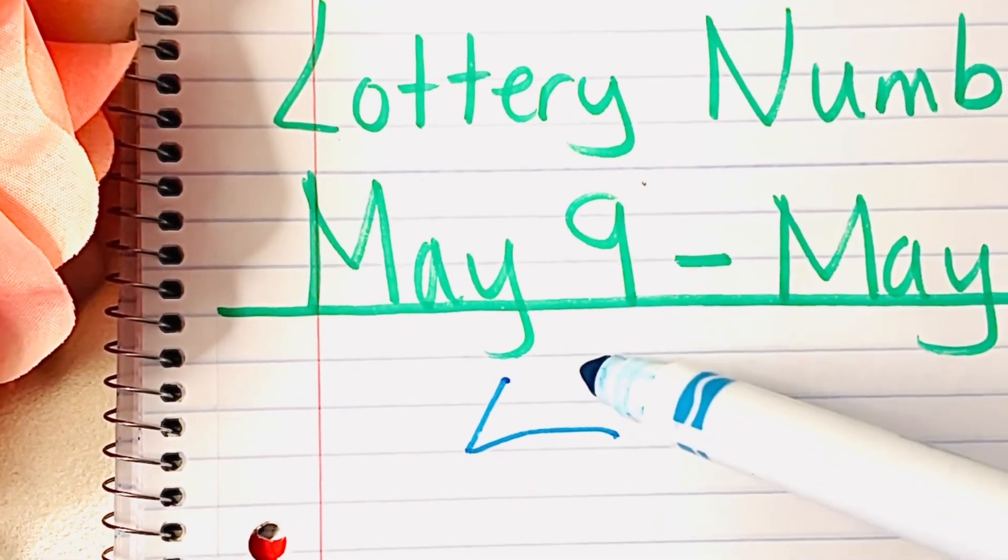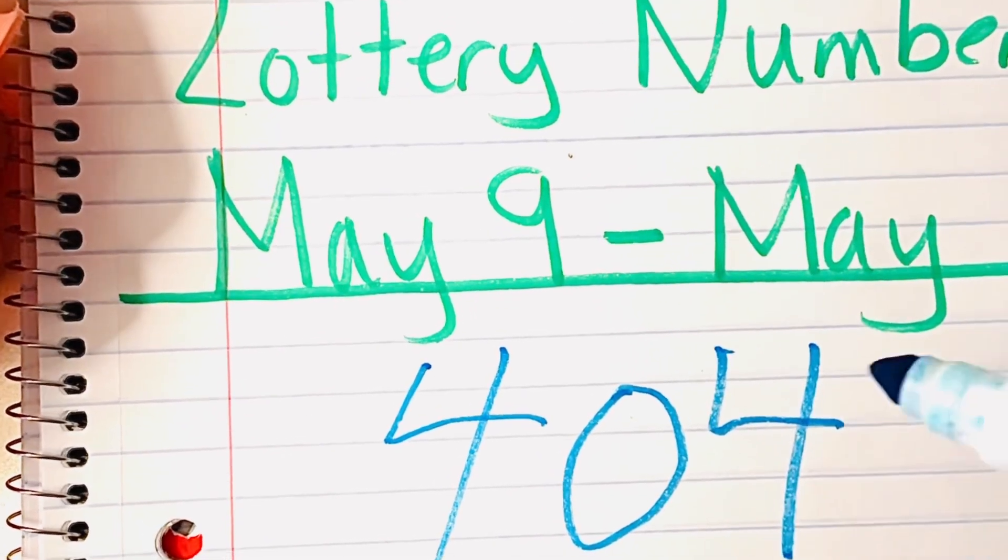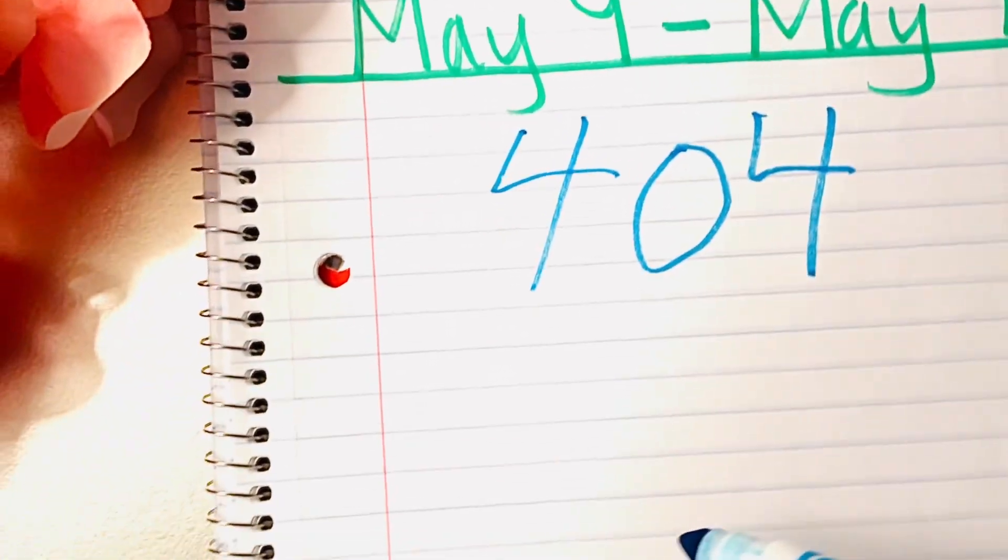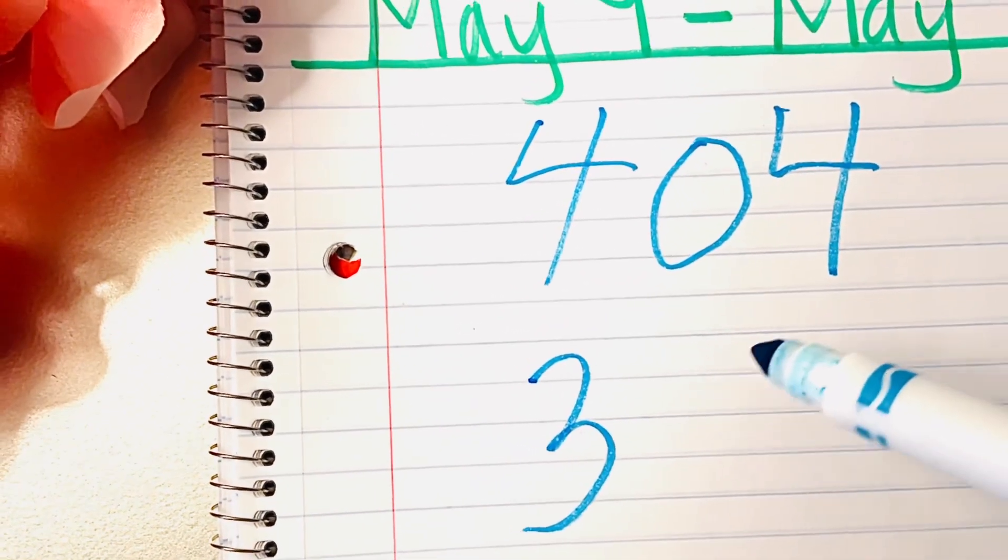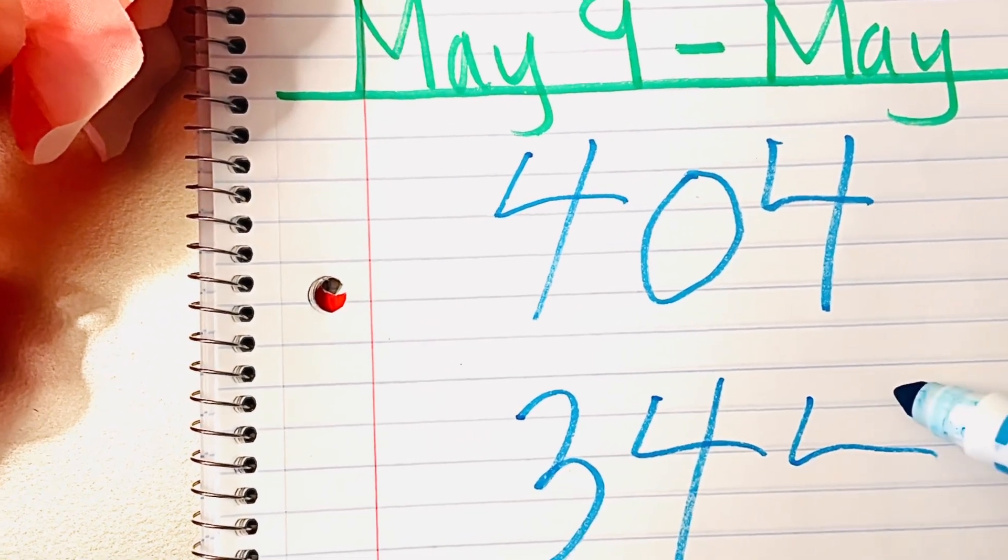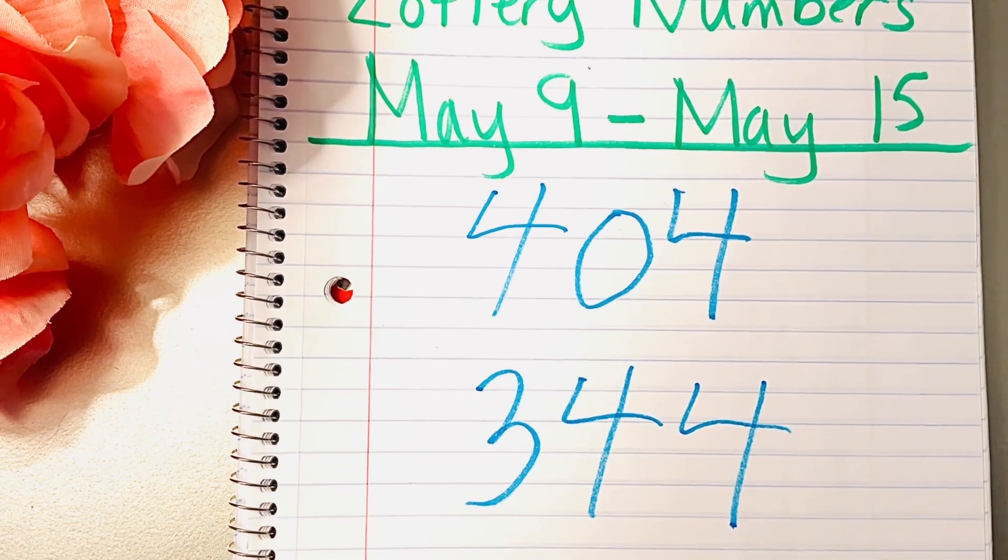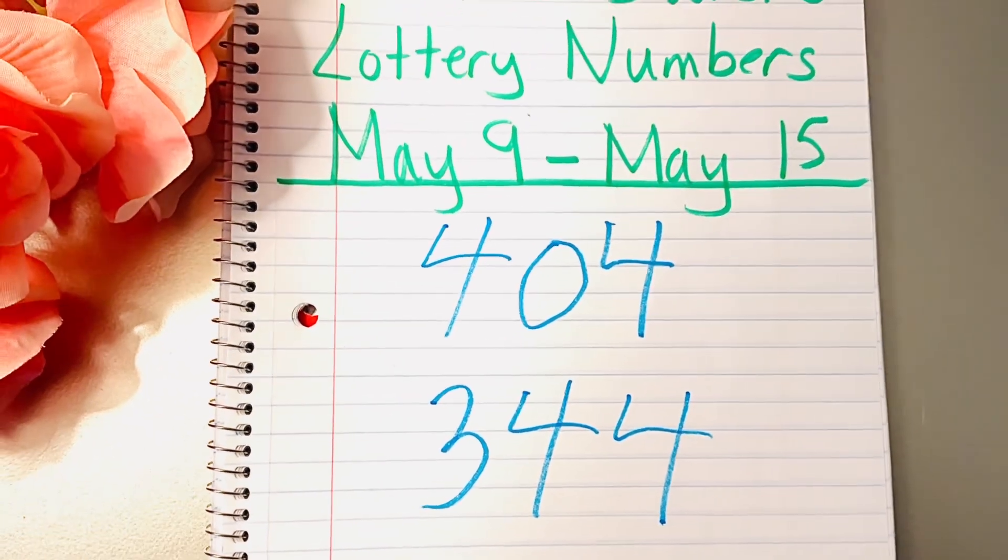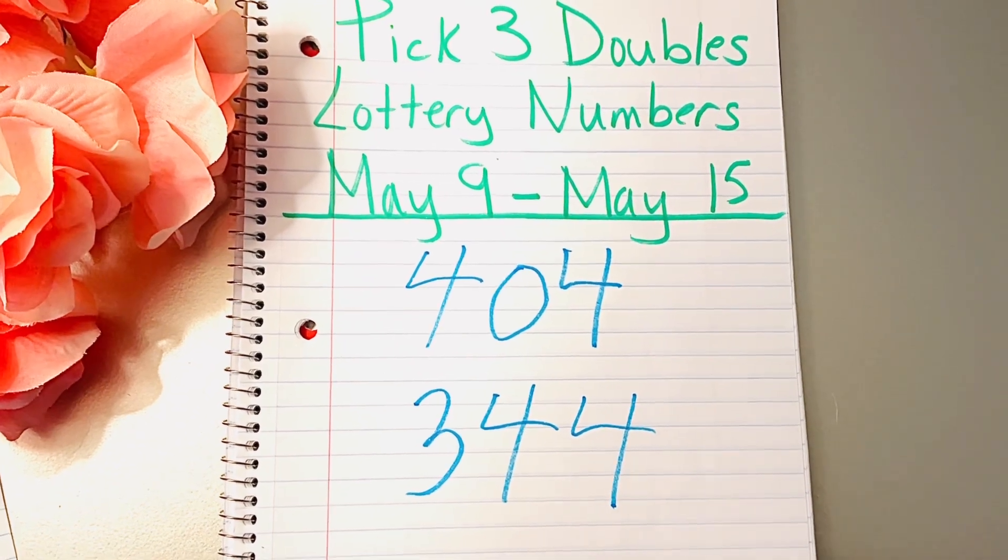Next we have our double fours: 404 is the first double on the list, and then we have 344. Now these two numbers are pretty much separate. And basically how I would play this is if fours were hot in my state. If you see a lot of fours falling, then definitely get on the double fours.